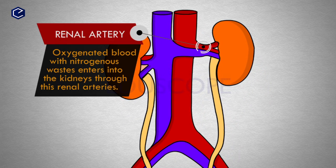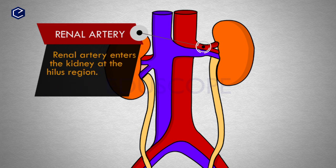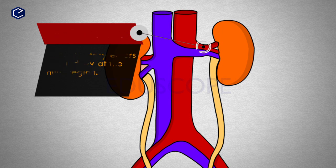Oxygenated blood with nitrogenous wastes enters into the kidneys through the renal arteries. The renal arteries enter the kidney at the hilum region.